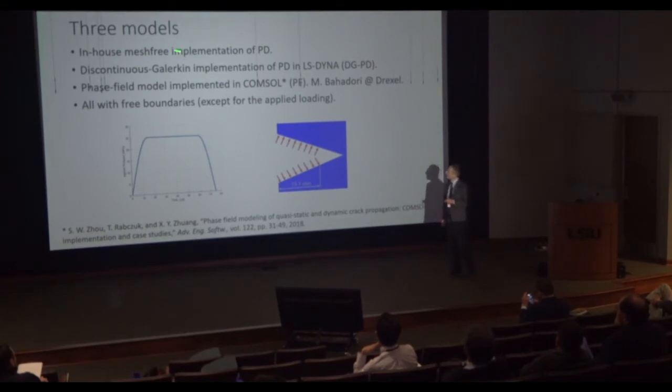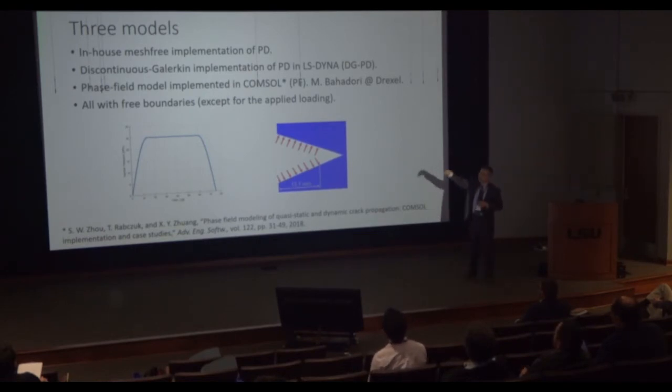So we are going to look at three models. One is the mesh-free implementation of peridynamics, the bond-based. I'm going to use the bond-based, the simplest, because glass is essentially linear elastic up to failure. So we're going to use a linear elastic and then a brittle failure after that. Then we also use a commercial software, there's a peridynamic implementation based on the discontinuous Galerkin method in LSDyna, now part of ANSYS. And then this phase field model following this paper in COMSOL implementation by our collaborator from Drexel.